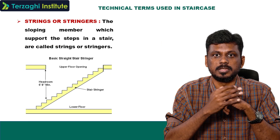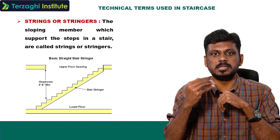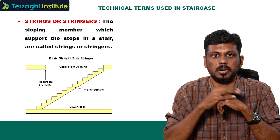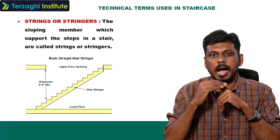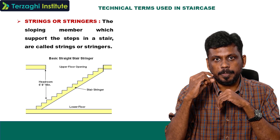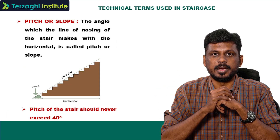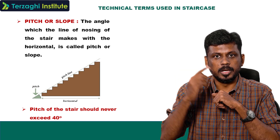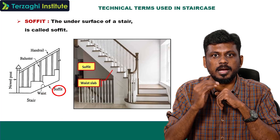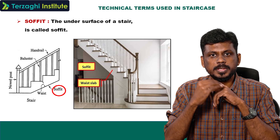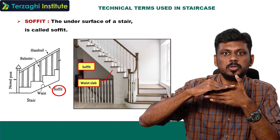The base of the slab is called the stringer. The vertical clearance is called headroom. If you look at the staircase, it is called nosing. Nosing is an imaginary line — it is a slope line or pitch line. The bottom of the stringer is called the soffit. This is the nosing of a staircase.